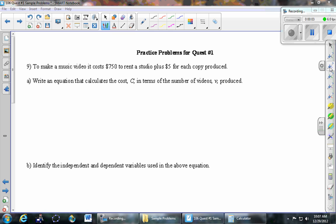This is problem number nine on the practice problems for Quest number one. To make a music video it costs $750 to rent the studio plus $5 for each copy produced. Part A: Write an equation that calculates the cost C in terms of the number of videos V produced.